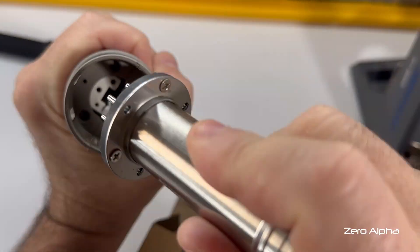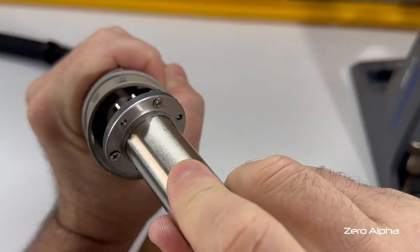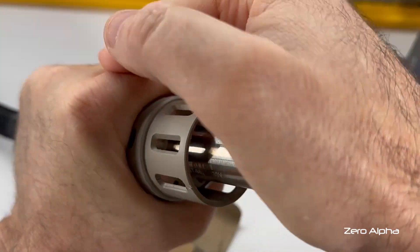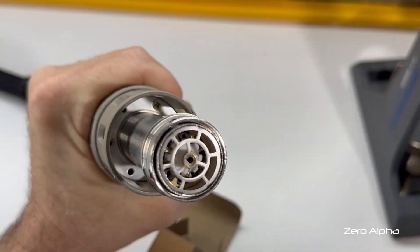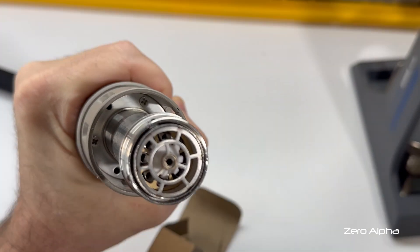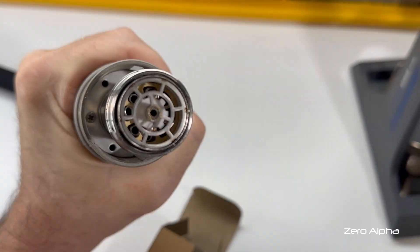It can only go in one way so make sure you line up the pins correctly. It's a bit hard to tell but you can see there's large pins and small pins. Push it all the way in and put your screws back in. If you don't put it in the correct way you will bend and damage the little pins.